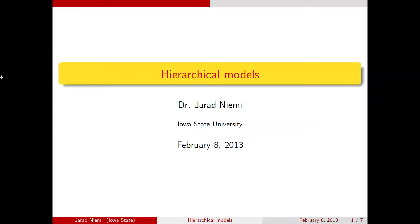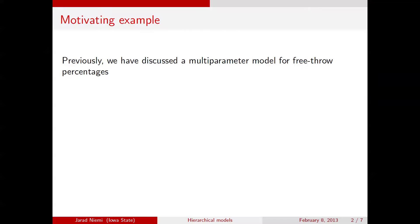Hello, Jared Niemy here with a mini-lecture on hierarchical models. Much of the approach here is based on the approach taken in Bayesian Data Analysis, second edition, by Gelman et al. Previously, we've discussed an example using the Mason-Plumlee free throw percentages — free throw makes and attempts across years — and we showed that this can be formulated as a multi-parameter model, but in fact you end up having independent analyses across the years.